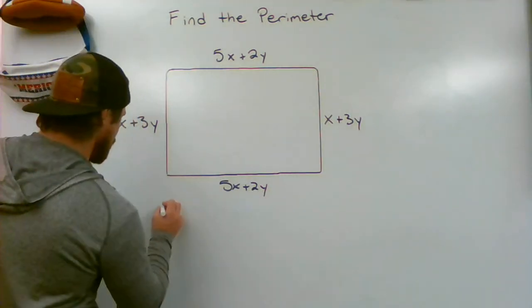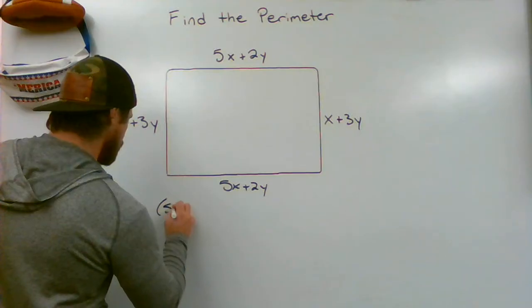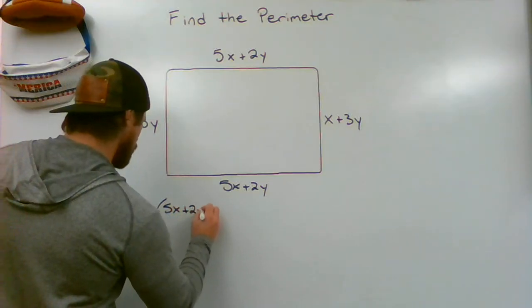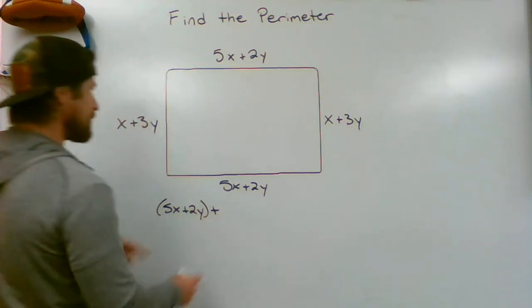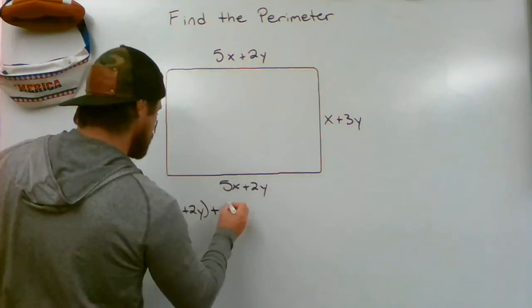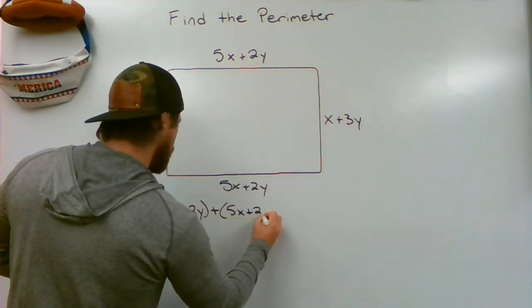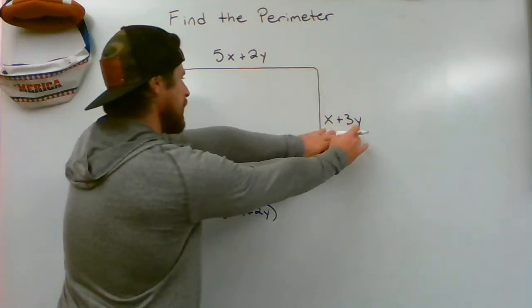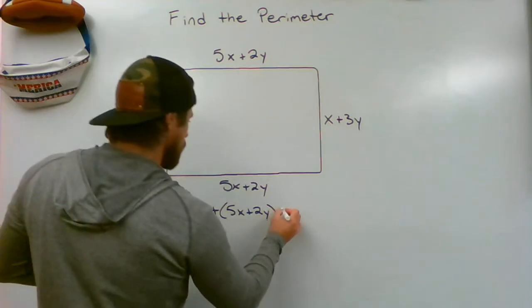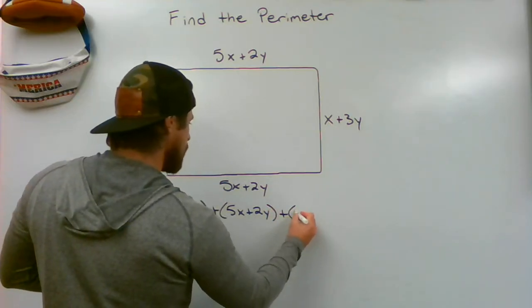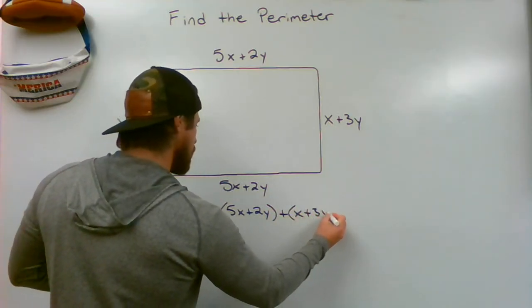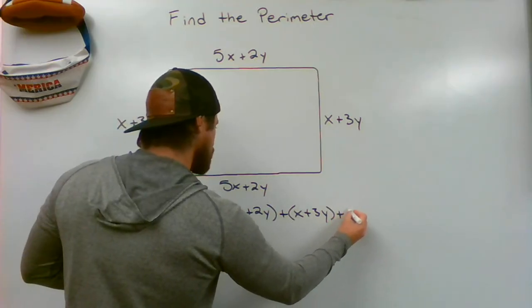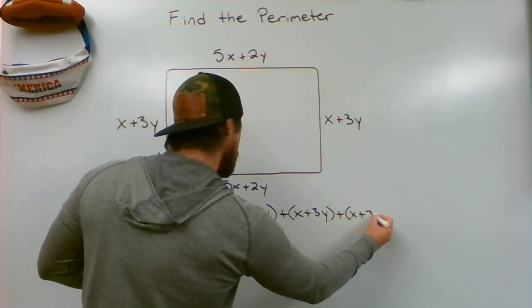We're going to add that to 5x plus 2y, which is also going to be added to x plus 3y twice: plus x plus 3y, plus x plus 3y.